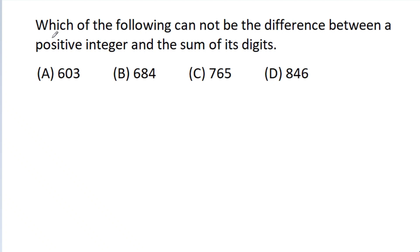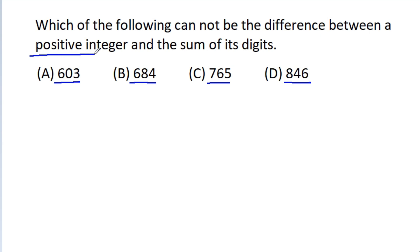In this video, we have to find which of the following cannot be the difference between a positive integer and the sum of its digits. Every option is a 3-digit integer, so the positive integer will also be 3 digits.